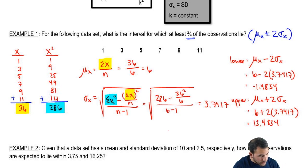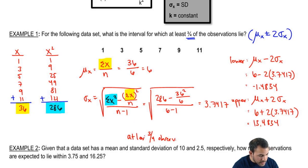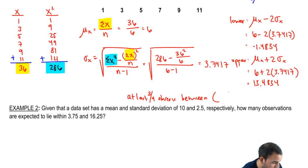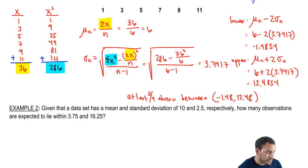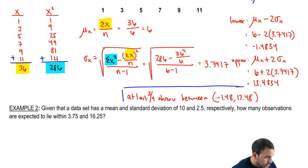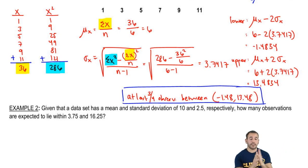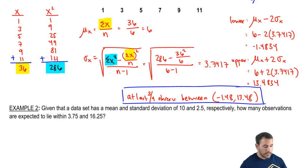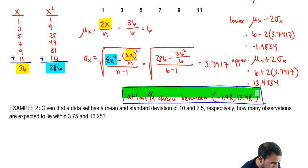Our final answer: at least three-fourths of observations lie between negative 1.48 and 13.48. We put the lower limit first in parentheses: (-1.48, 13.48). We should expect that at least three-fourths of observations lie above and below the mean by two standard deviations — that's negative 1.48 and 13.48. Example one complete.